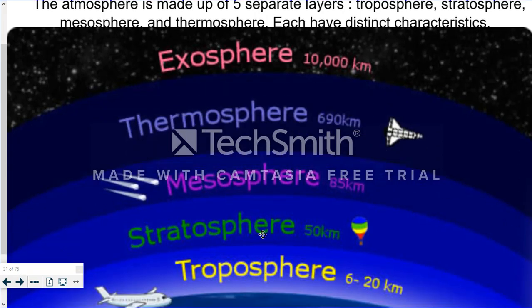The troposphere, stratosphere, mesosphere, thermosphere. And the thermosphere is actually broken into two separate layers. One called the ionosphere, which lies at the bottom of the thermosphere. And the other one is the exosphere, which is at the top of the thermosphere.